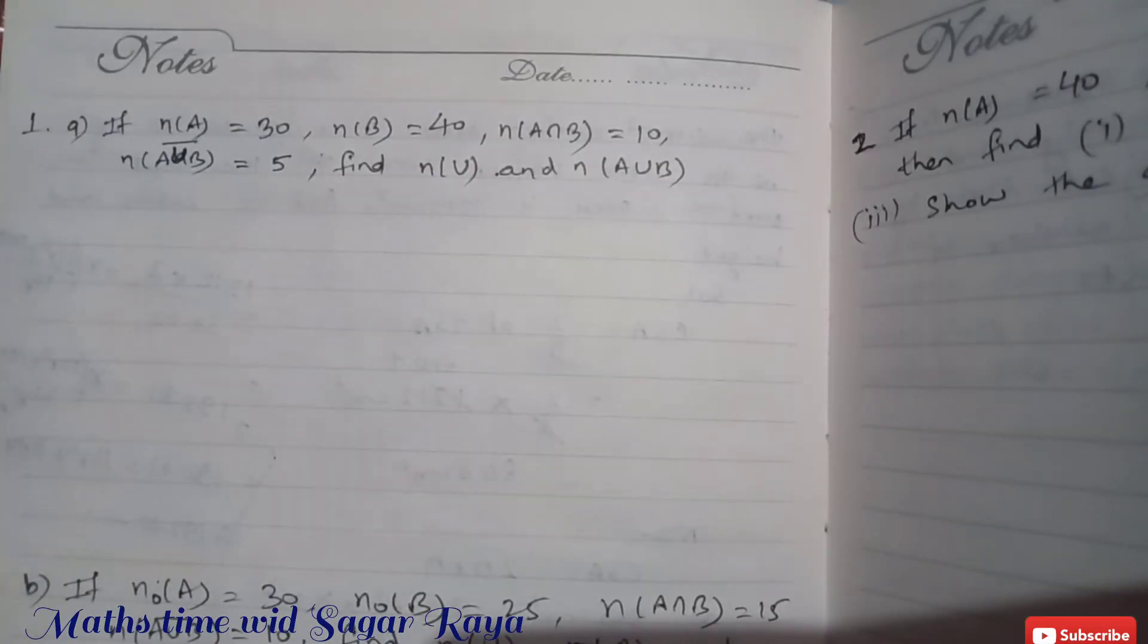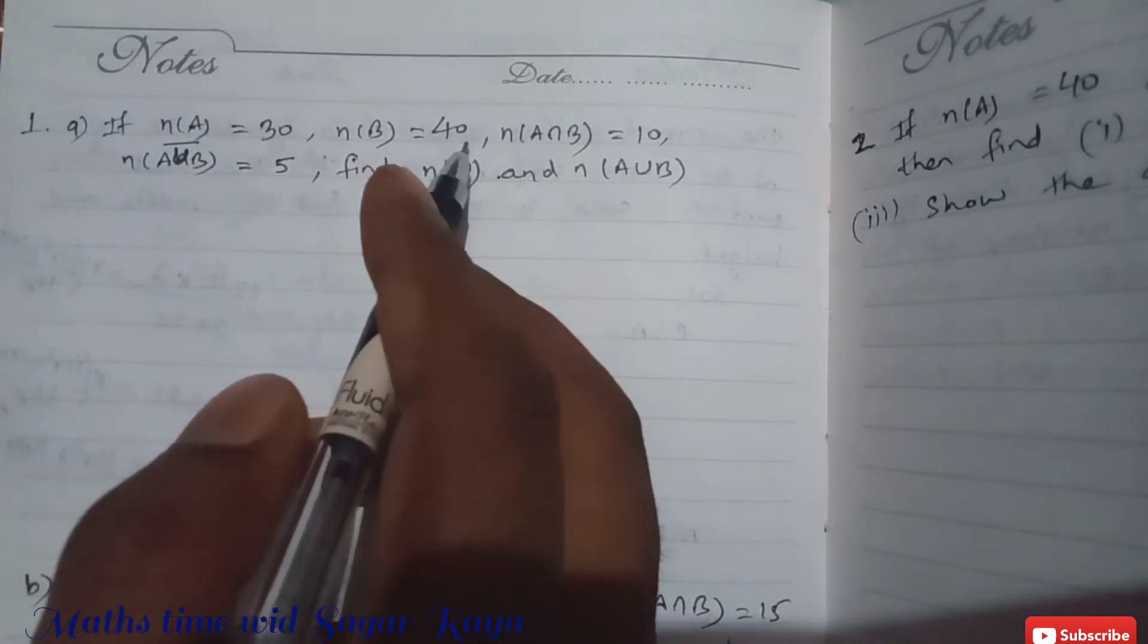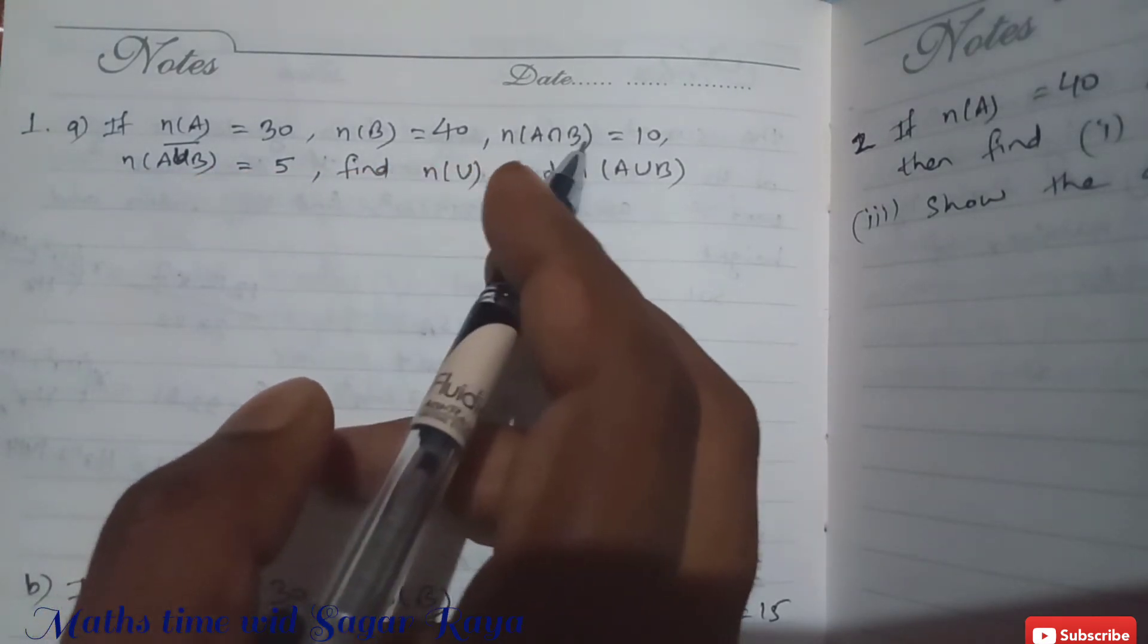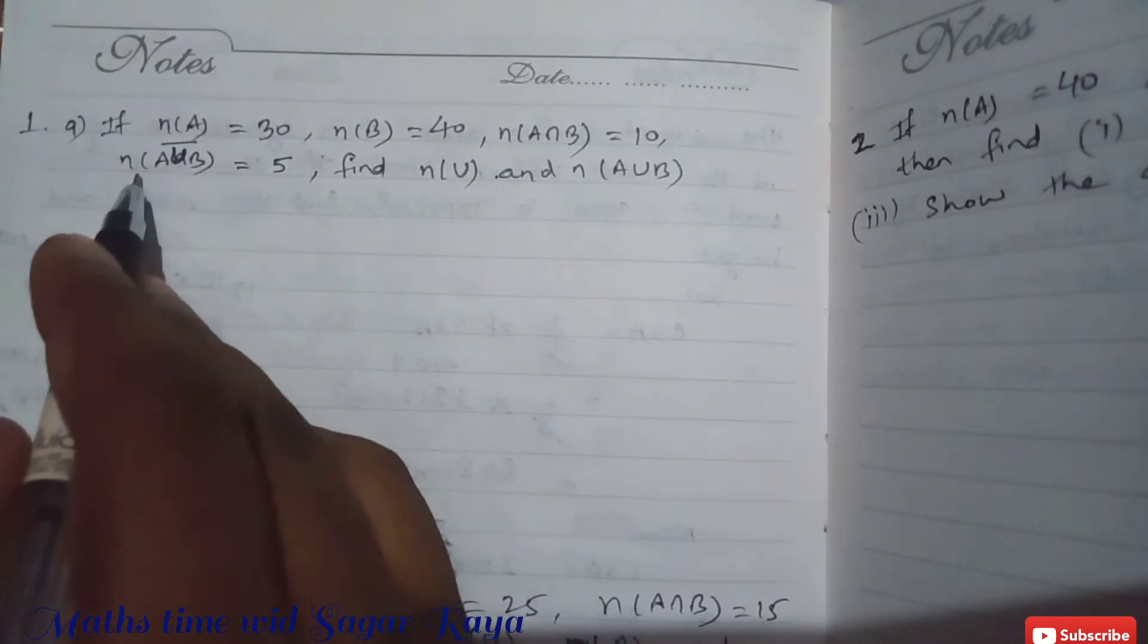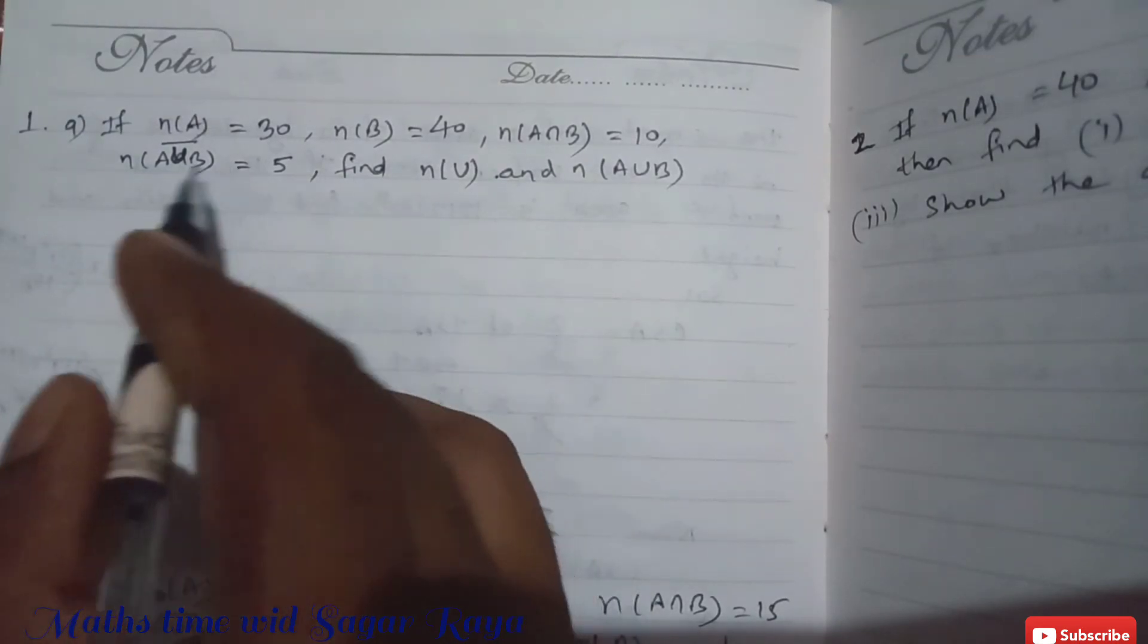Hello friends, welcome to my channel Math's. My name is Sagar Raya. Today I am back with a question from set theory. In the screen you can see the question: if n(A) = 30, n(B) = 40, n(A∩B) = 10, and n(A∪B)' = 5, then we have to find n(U) and n(A∪B).